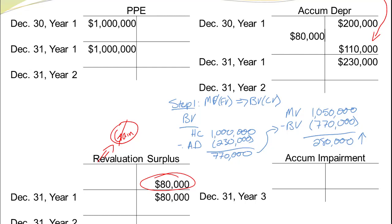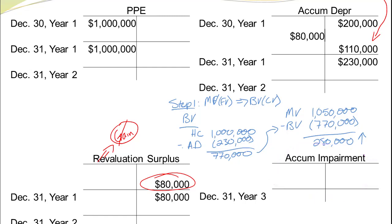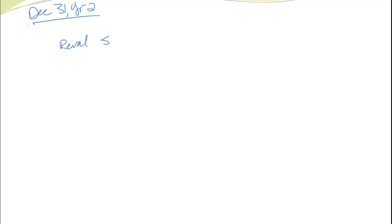Because there's an increase, the first thing I check is whether I have any losses I can offset and show a gain. No — I didn't have any losses before, and I showed a gain last year, so there's nothing to offset. I'm going to have to put all of that into revaluation surplus. We'll credit revaluation surplus $280,000.